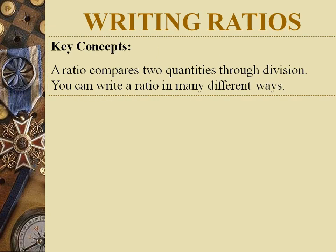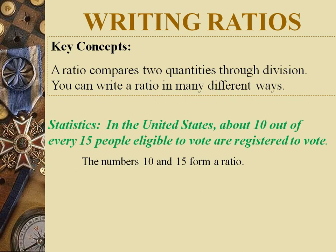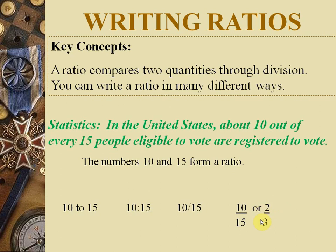Now, how to write a ratio. A ratio compares two quantities through division. For example, in the United States, about 10 out of 15 people eligible to vote are registered to vote. So we can write this as 10:15, or 10/15. In simplest form, this becomes 2/3 — meaning among every three people, two are eligible to vote.